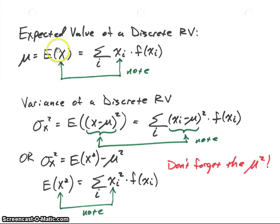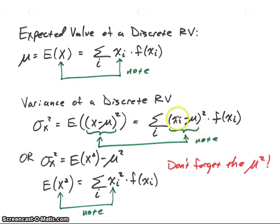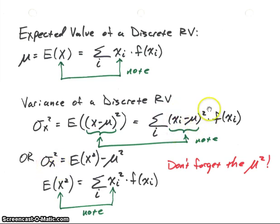Whatever we have inside the expected value expression, we put in front of the distribution function. For the variance, remember we had two equations, so there are two ways to calculate it. The first way: we have the expected value of x minus mu, squared. So it looks very similar to the mean equation, but now we have x sub i minus mu, quantity squared, times the distribution function — summed over all values of the random variable. However, for each term we have to subtract the mean, which can get tedious.